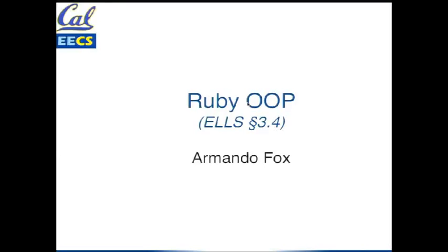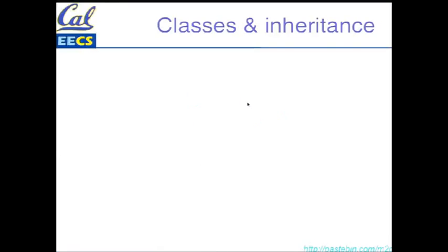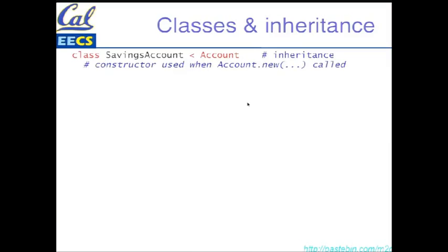I'll talk a little bit about OOP in Ruby. I think it's easiest, in this case, to just walk through an example of how you do simple classes and inheritance. So we're going to define a new class for a bank savings account, and it inherits from Account. That's what the less than notation means.